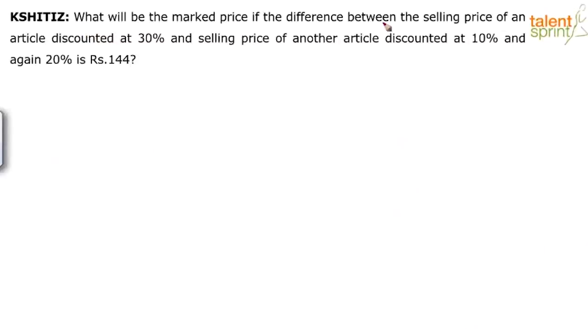What will be the marked price if the difference between the selling price of an article discounted at 30% and selling price of another article discounted at 10% and again 20% is Rs. 144?